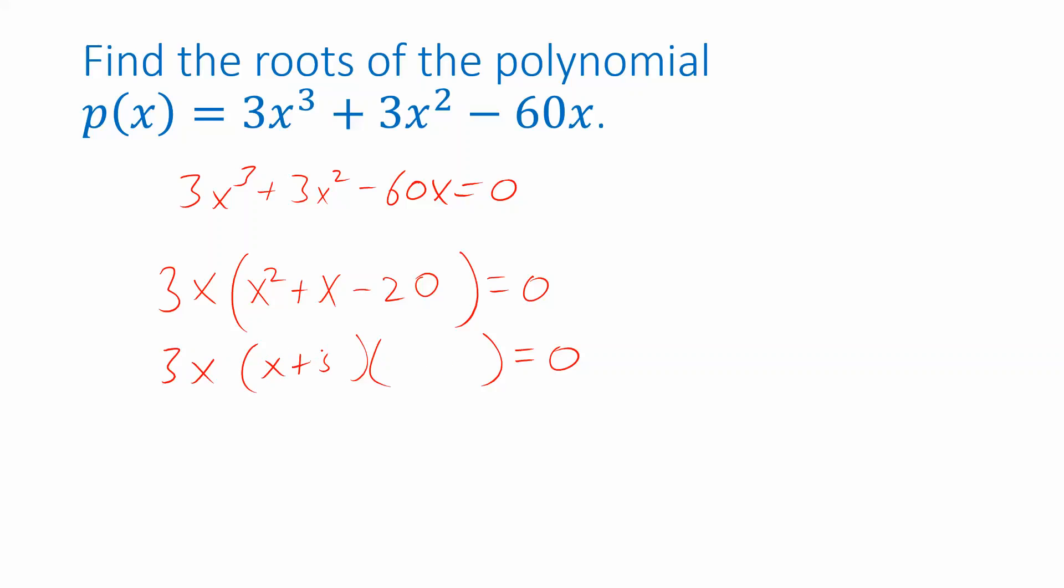But let's do it with factoring. This is x plus 5 times x minus 4. Because when I add positive 5 and negative 4, I get positive 1, which is the coefficient I need in front of the x. And when I multiply positive 5 and negative 4, I get negative 20, which is the constant I need. Great.